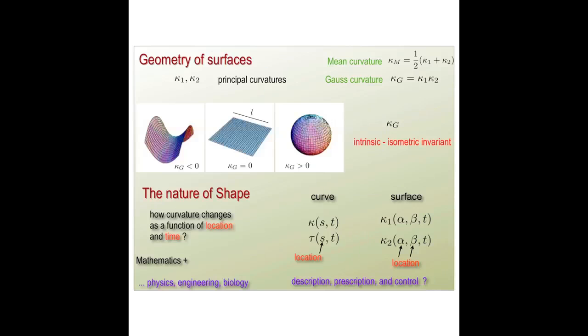As a mathematician, what I'd like to do, what our community likes to do, is to write down equations, for example, which tell you how the curvature changes for a curve. There's another quantity called the torsion. I'm happy to tell people about this later on. Or how the surface changes.